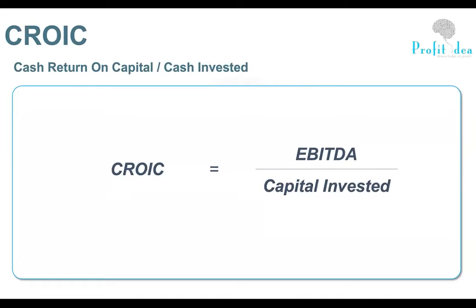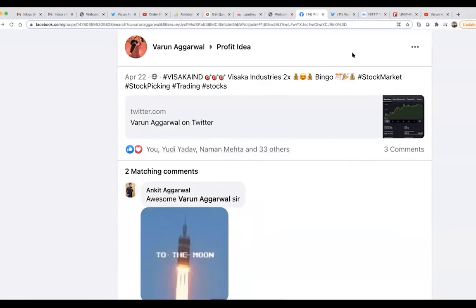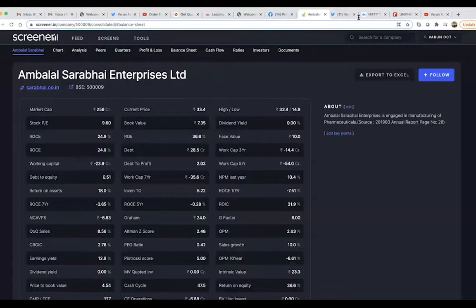If you realize that the business is really doing well, then you can look at that business and determine whether it can be good or not. Regarding a query from the chat — can we see CROIC on Screener? The answer is yes. Let me show you CROIC on Screener live so you can understand how to apply this parameter and how to approach a stock.